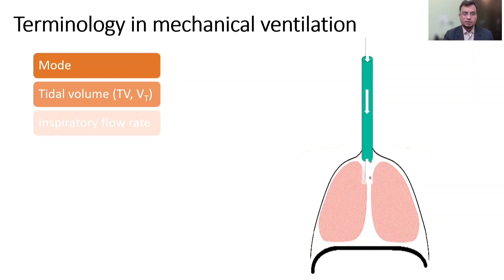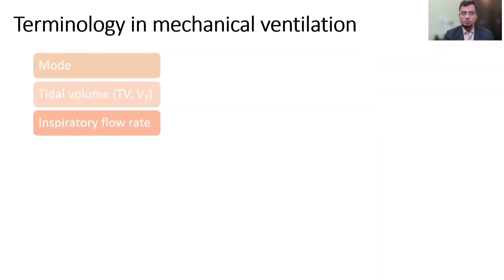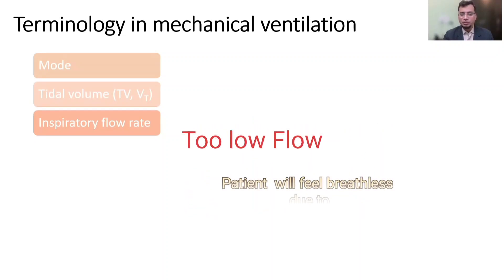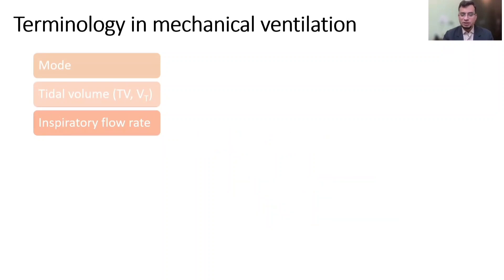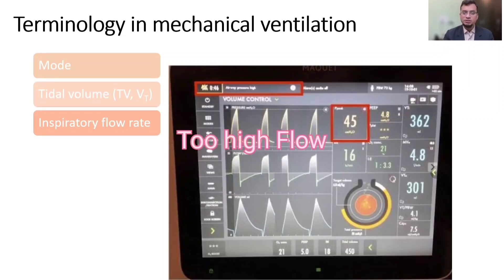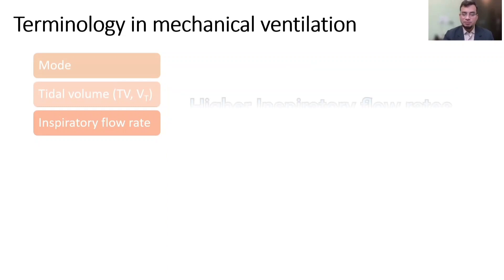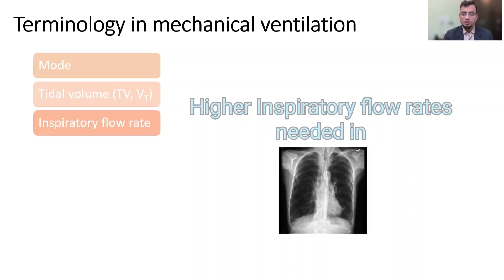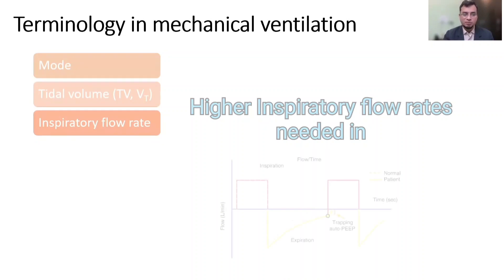The flow rate or peak respiratory flow rate is the maximum flow at which a set tidal volume of breath is delivered by the ventilator. Most modern ventilators can deliver flow rates between 60 to 120 liters per minute. If the peak flow rate is too low, the patient will feel it and there will be increased work of breathing. If set too high, that may increase the peak airway pressure. Higher peak flow rates may be necessary in patients with obstructive lung disease to decrease inspiratory time, thereby increasing expiratory time and reducing the risk of developing auto-PEEP.